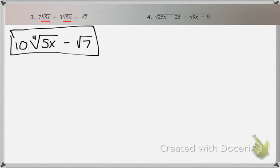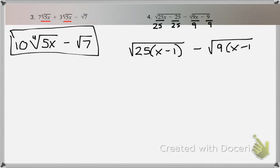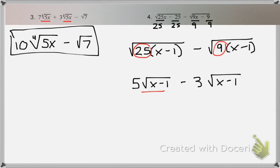For number 4, we do need to try to simplify both of those radicals. So you might notice that first radical has a GCF of 25. When you rewrite your radical, make sure you include your GCF in your radicand. And that second radical has a GCF of 9. And I see that the square root of 25 is 5. And the square root of 9 is 3. So now I have the same index and the same radicand. So all I need to do is 5 minus 3. So it's 2 root x minus 1.